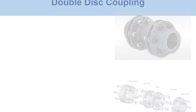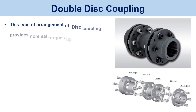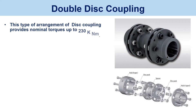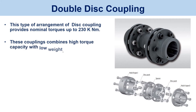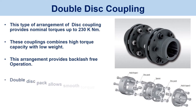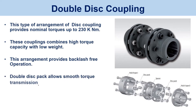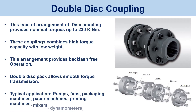Double disc coupling. This arrangement provides nominal torques up to 230 kNm. These couplings combine high torque capacity with low weight and provide backlash-free operation. The double disc pack allows smooth torque transmission. Typical applications involve pumps, fans, packaging machines, paper machines, printing machines, mixers, and dynamometers.